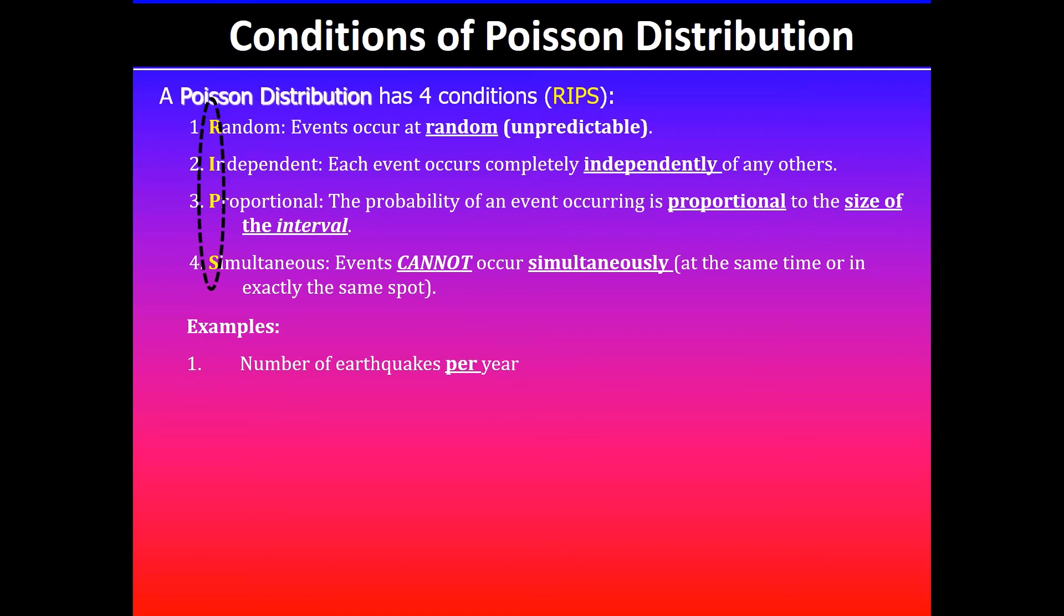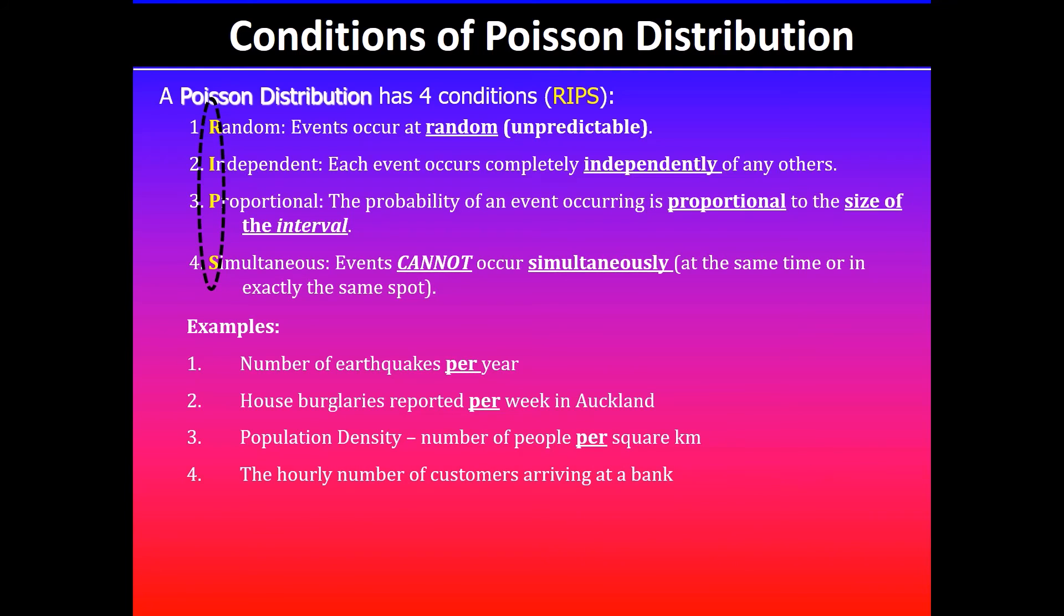Looking at examples: the number of earthquakes per year, house burglaries reported per week in Auckland, population density - number of people per square kilometer, the hourly number of customers arriving at a bank, the daily number of emergency calls in Auckland, the number of typos in a book, and the monthly demands for a particular product. These are some examples where we can use Poisson distribution.